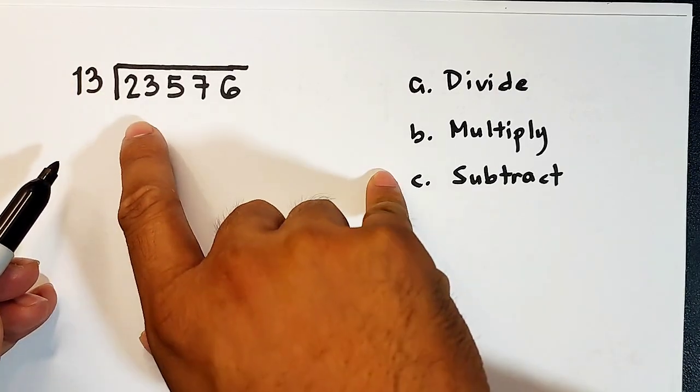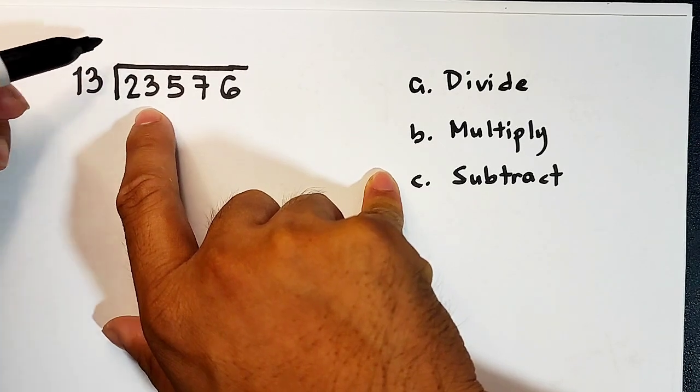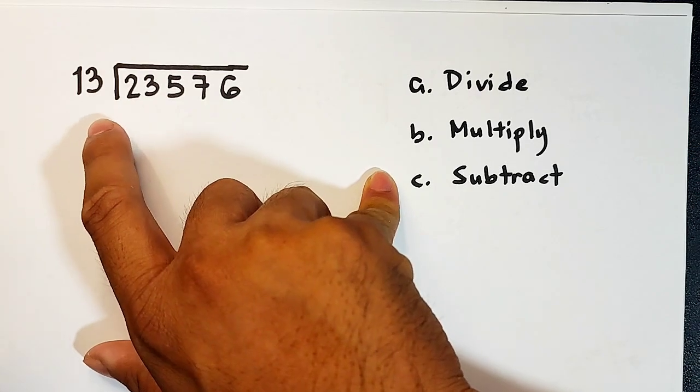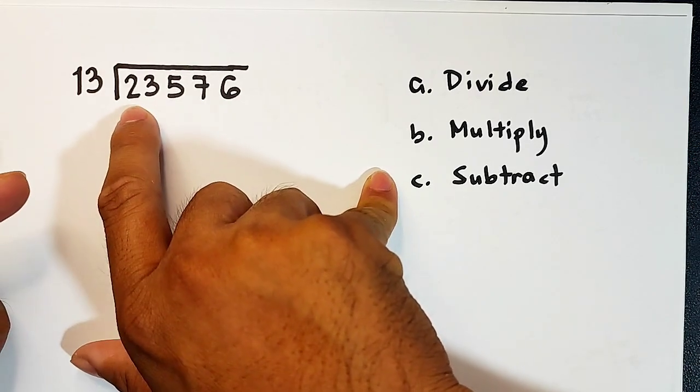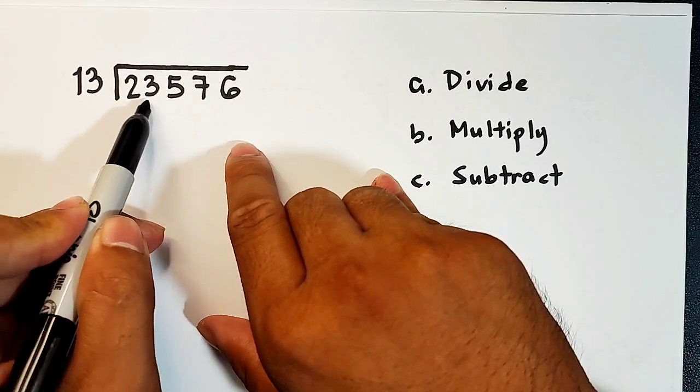But we know that 13 is greater than 2, so we cannot have 13 inside 2. The answer here is 0, guys. It's impossible to have 13 inside 2. So after this, since 2 cannot work, we will move to the two-digit number, which is 23.